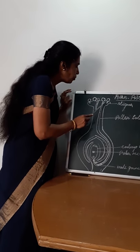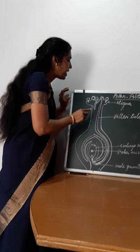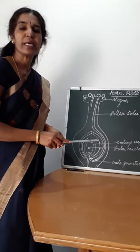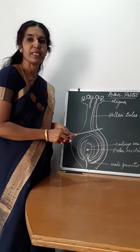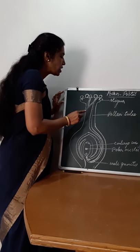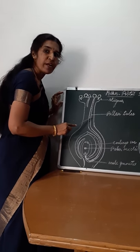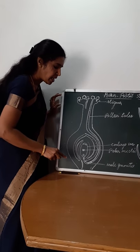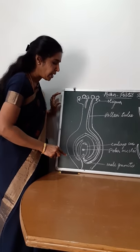When the pollen tube grows through the style, the generative cell — as you have already learnt, when the pollen matures it has two cells: vegetative and generative cell — the generative cell starts moving with the pollen tube as it grows through the style to reach the ovary and enters into the embryo sac through the micropylar end.